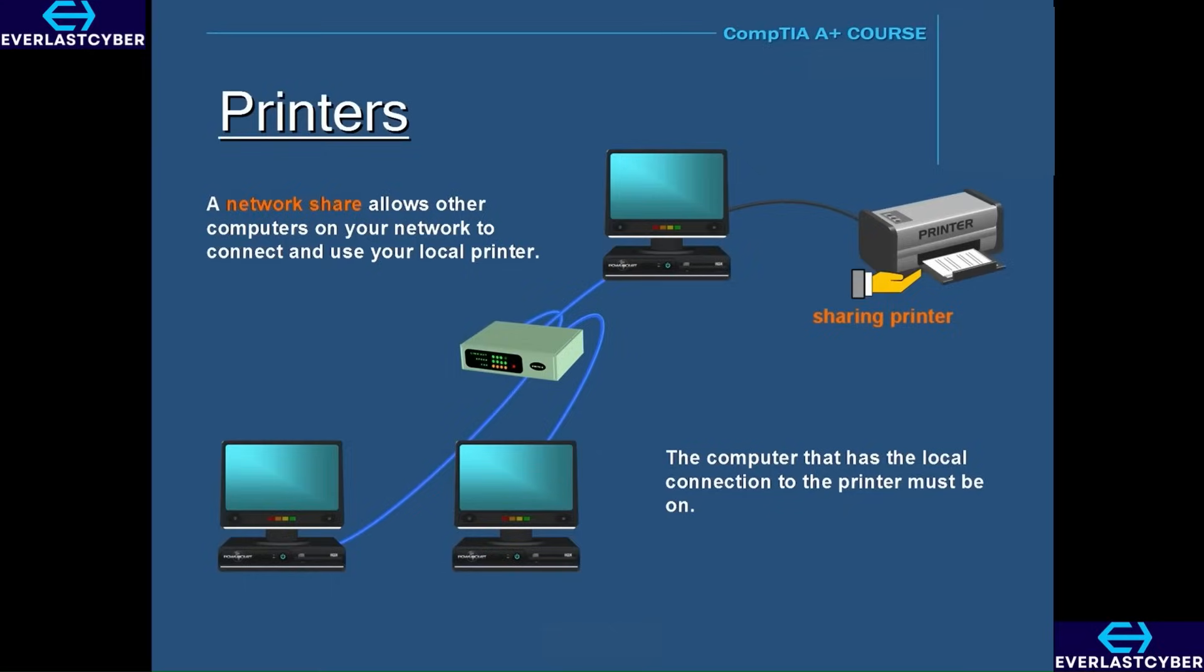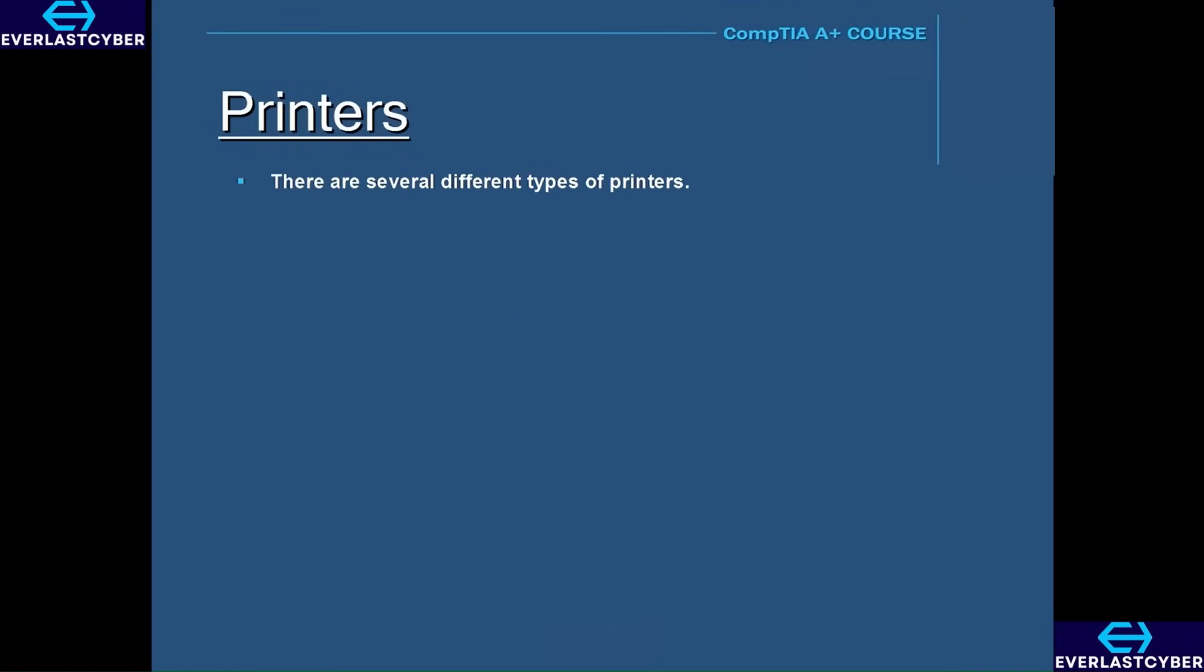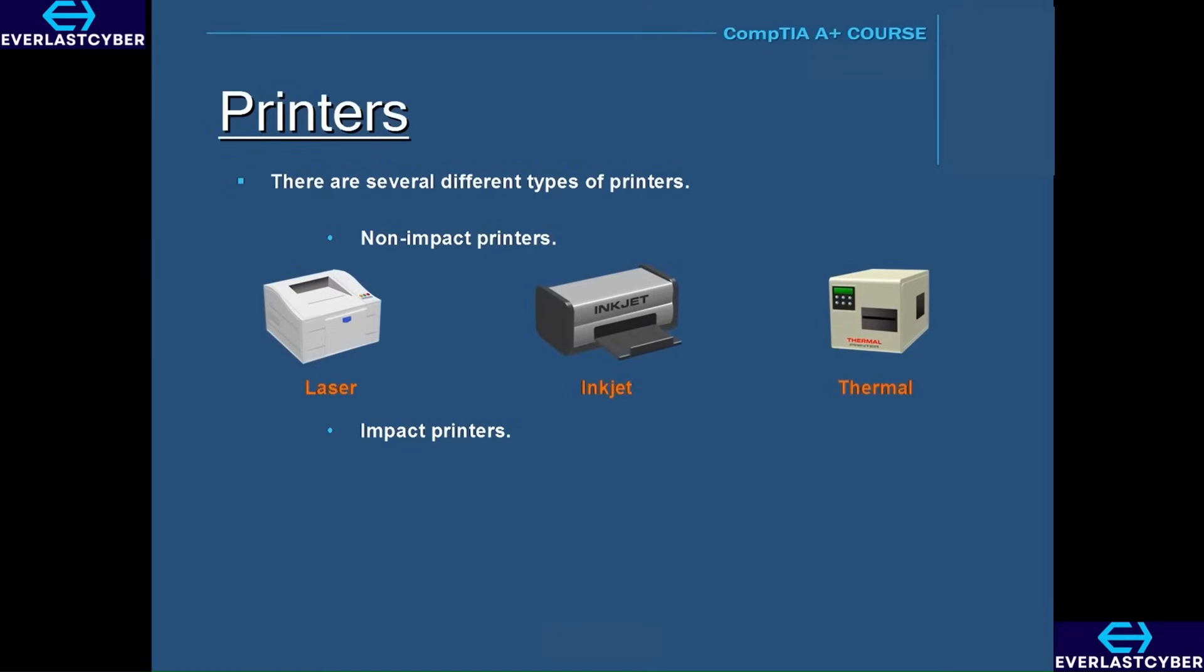There are several different types of printers. There are non-impact printers and impact printers. Non-impact printers include laser, inkjet, and thermal printers. Impact printers are dot matrix printers, which we'll talk about next.